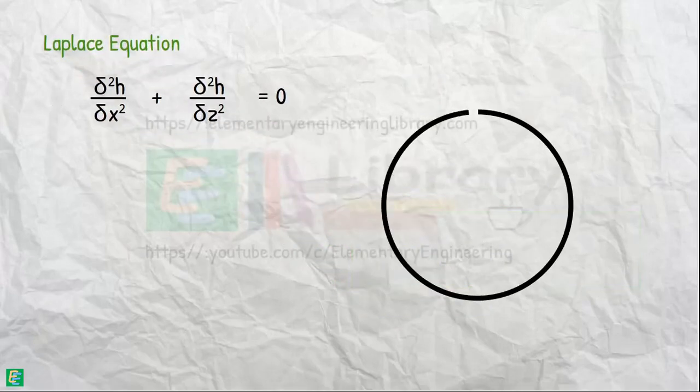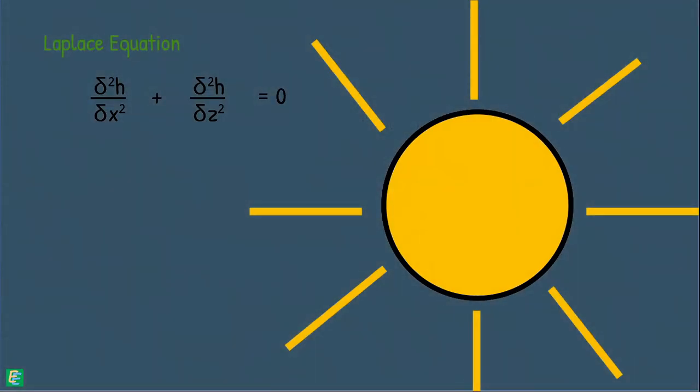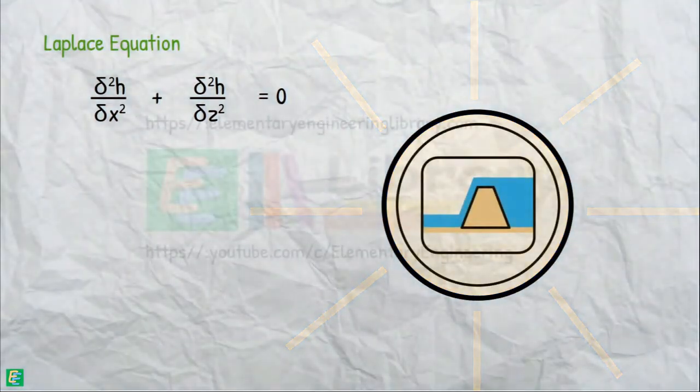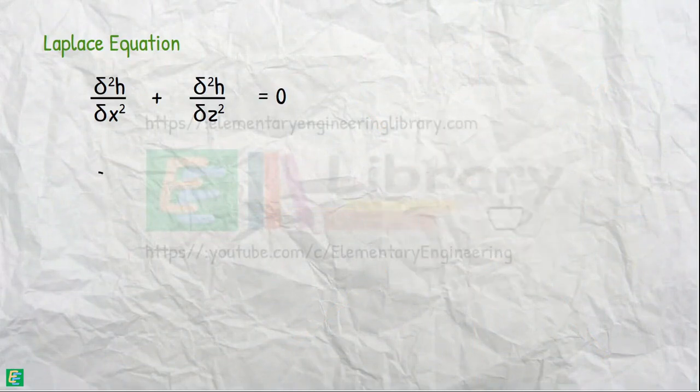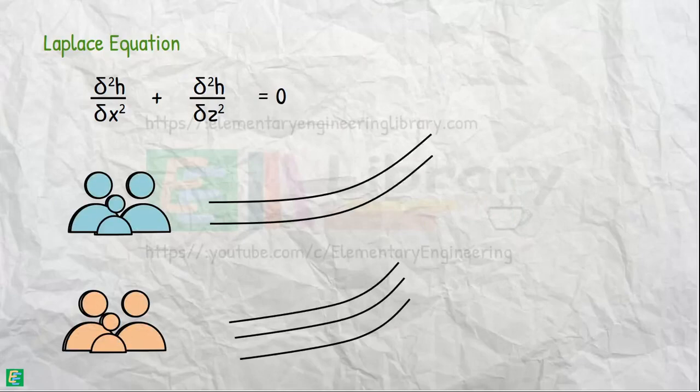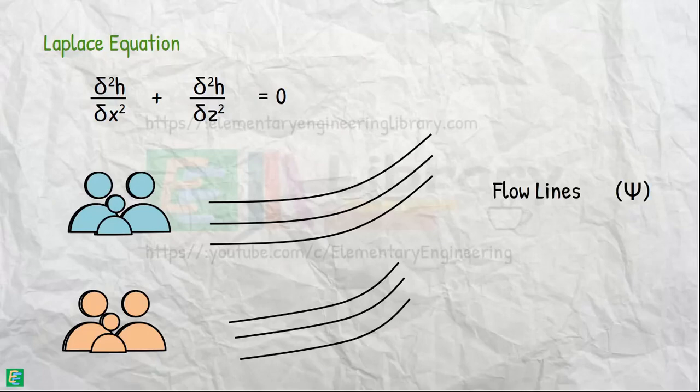Laplace equation describes the loss of energy through the space, and in our case that energy is in the form of hydraulic head. When we solve a Laplace equation, we receive two families of curves: one set of curves is known as flow lines and the other set is equipotential lines.